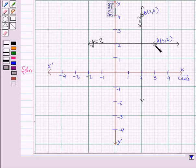Now, the reflection of the point A in the line x=2 is the point C whose coordinates are (1,2).